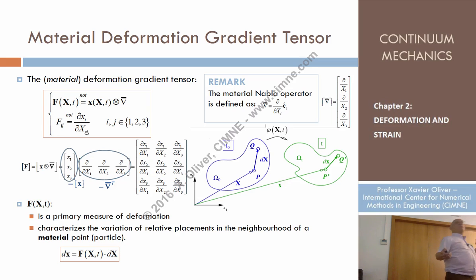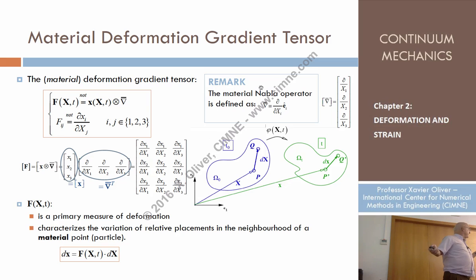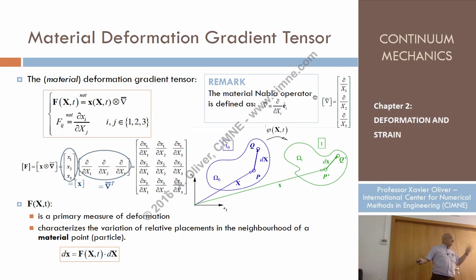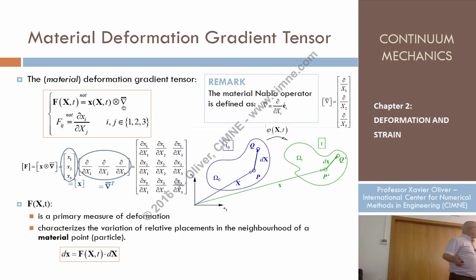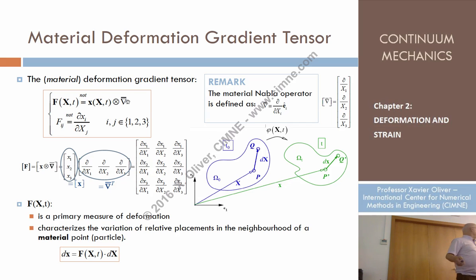We defined nabla as a symbolic operator involving derivatives with respect to small x — spatial coordinates. Now I'm writing something similar, but involving derivatives with respect to material coordinates, capital X. So it's different. I will denote this with a bar: everything referred to material coordinates is capital, so I define this material nabla with an upper bar to distinguish it from the spatial nabla.